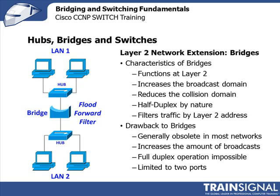Bridges, which we covered in some detail — you probably recognize the graphic to the left. Bridges function at layer two and increase the broadcast domain. The bridge sits in the middle, creating two collision domains but still one broadcast domain, because using flood, forward, or filter, it passes on all broadcasts. Bridges are half duplex by nature but do filter traffic by layer two address based on the table built in memory. Drawbacks: they are generally obsolete. They increase the amount of broadcasts, full duplex operation is not possible, and they are essentially limited to two ports.